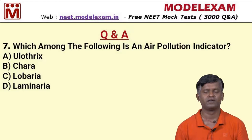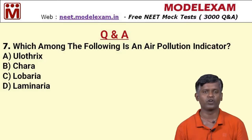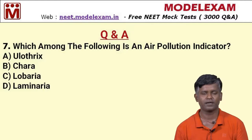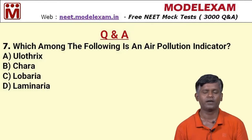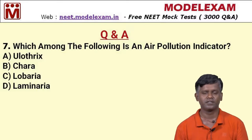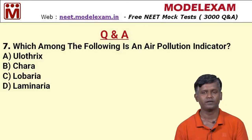Question number seven: which among the following is an air pollution indicator? Option A: Ulothrix, option B: Chara, option C: Lobaria, option D: Laminaria. Among these, the best example of a pollution indicator is Lobaria. So the answer to question seven is option C.